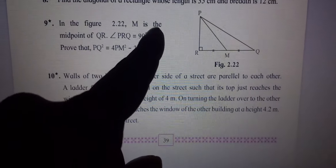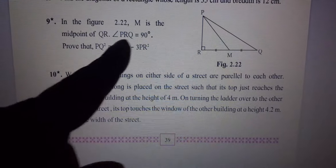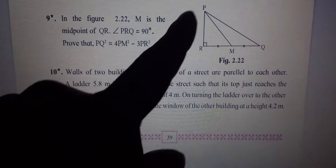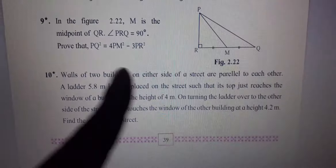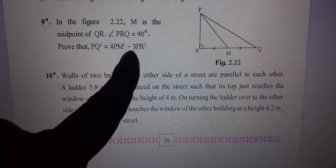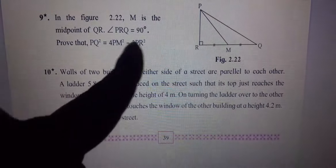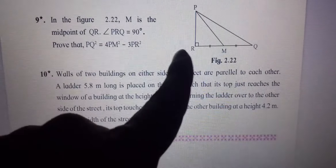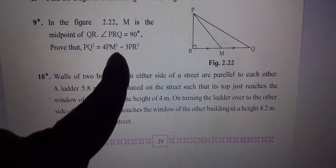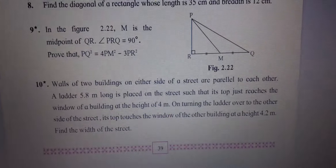In figure 2.22, M is the midpoint of QR. Angle PRQ is 90 degrees. Prove that PQ square is equal to 4PM square minus 3PR square.